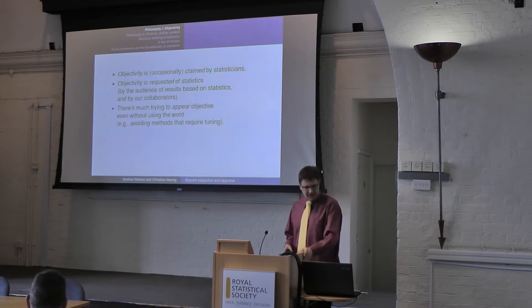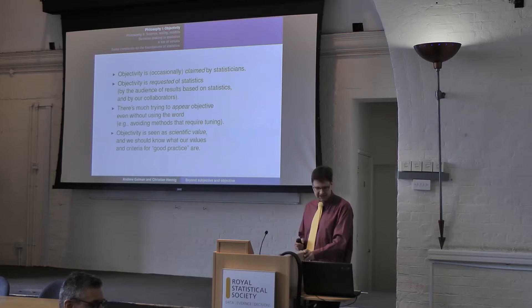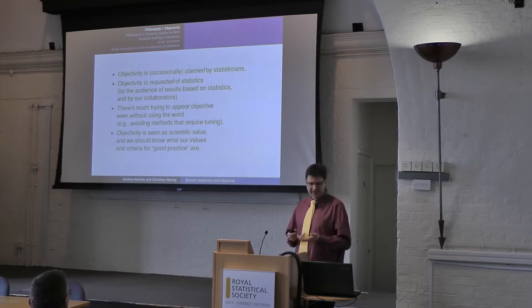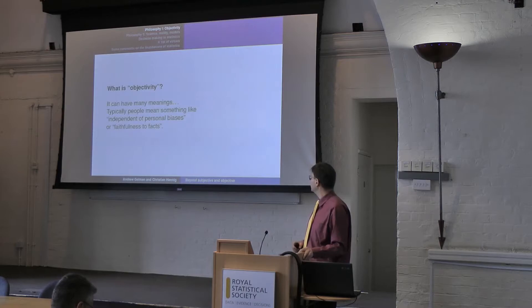There's much trying to appear objective even without using the term — for example, by avoiding methods that require decisions that people wouldn't feel confident to make. Quite generally, objectivity is seen as a scientific value. We statisticians should know what our values are if we want to figure out what in our field is good practice. So what is objectivity, actually? It can have many meanings. Typically people mean something like independence of personal biases, or faithfulness to facts — and these two are already quite different from each other.